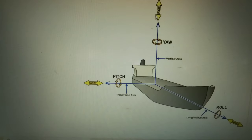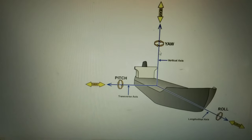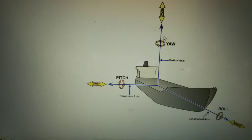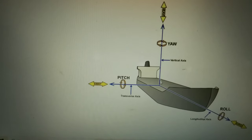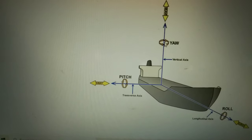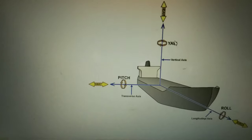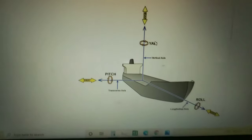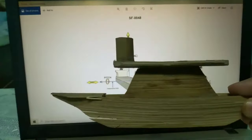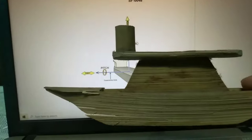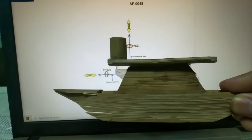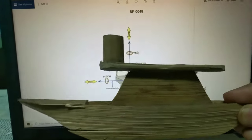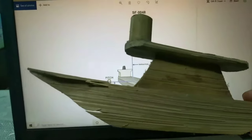What is yawing? This is the vertical axis. If your ship makes an angle with the vertical axis — see this arrow — then it is called yawing. This is the ship, and this is yawing — it makes an angle with the vertical axis.